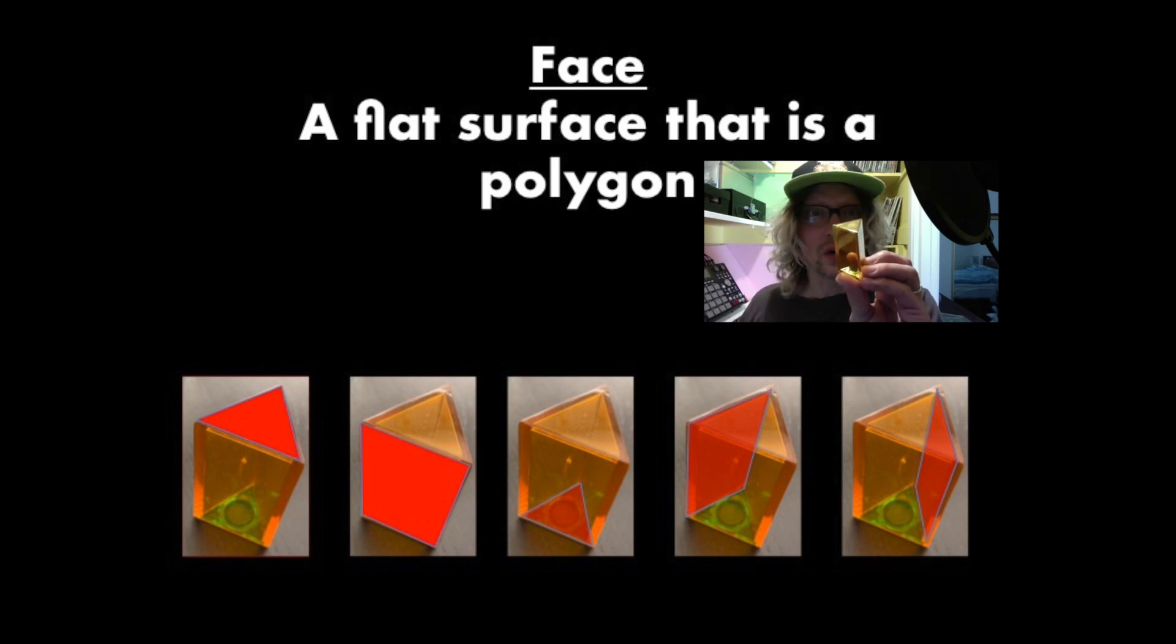In that case, it's a triangle. That is one of its faces. It also has a rectangular face in the front, a triangular face on the bottom, and if you look at the back here, it has two rectangular faces. So this triangular prism has five faces altogether. It has five flat surfaces that are polygons.